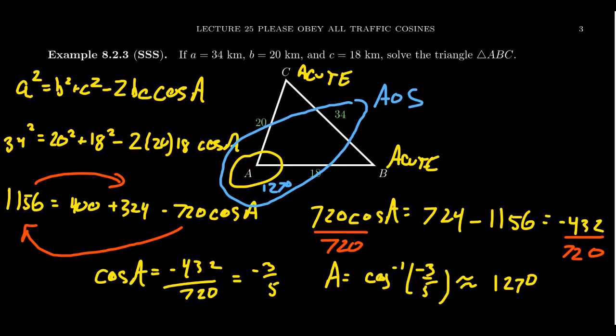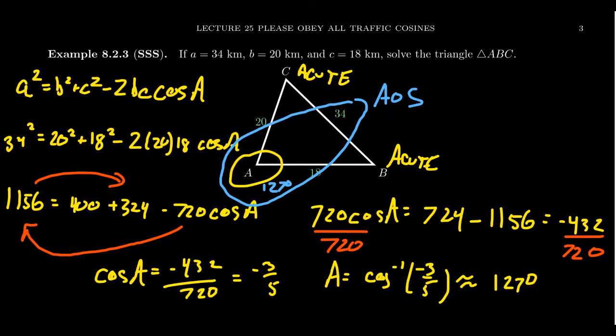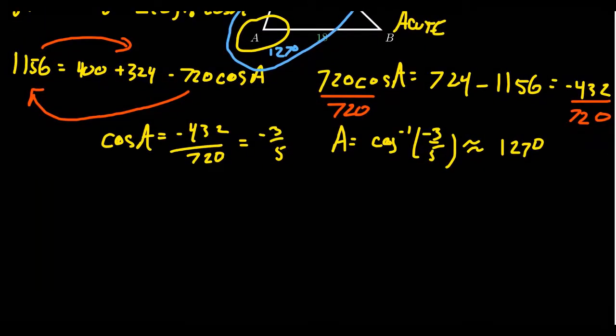To find the other two angles, B and C, we could use the law of cosines again. That's a perfectly great strategy. But be aware that we're going to use the law of sines to try to do this thing a lot simpler for us.